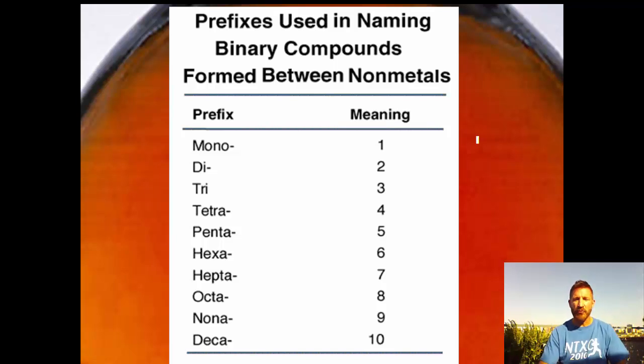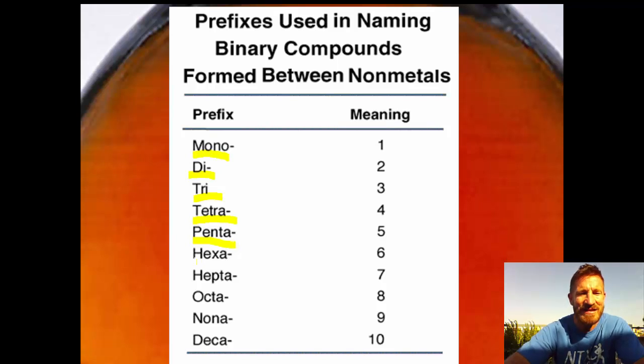So what are the prefixes? These prefixes need to be memorized. We're going to use them so much. Let's go over them quickly: 1 is mono, 2 is di, 3 is tri, 4 is tetra, 5 is penta like a pentagon, 6 is hexa like a hexagon, 7 is hepta, 8 is octa, 9 is nona, and 10 is deca, think of decade.